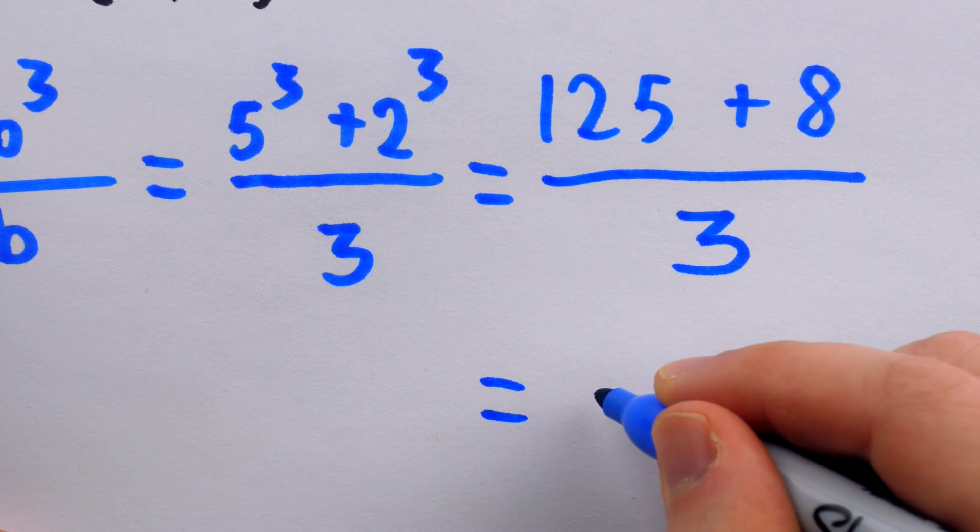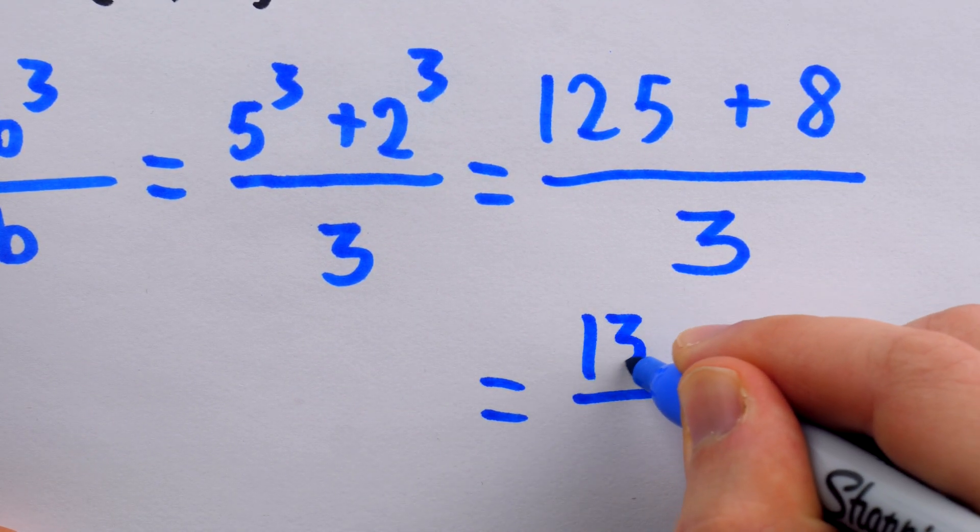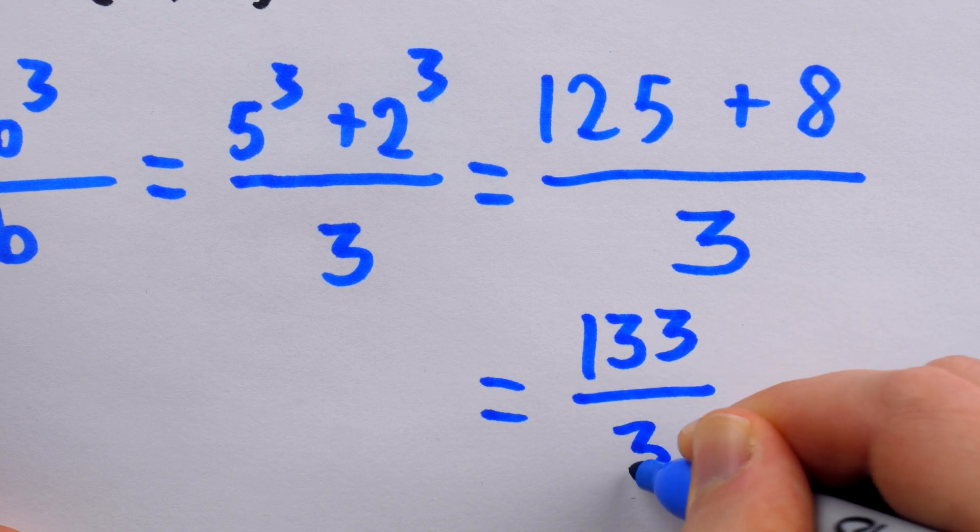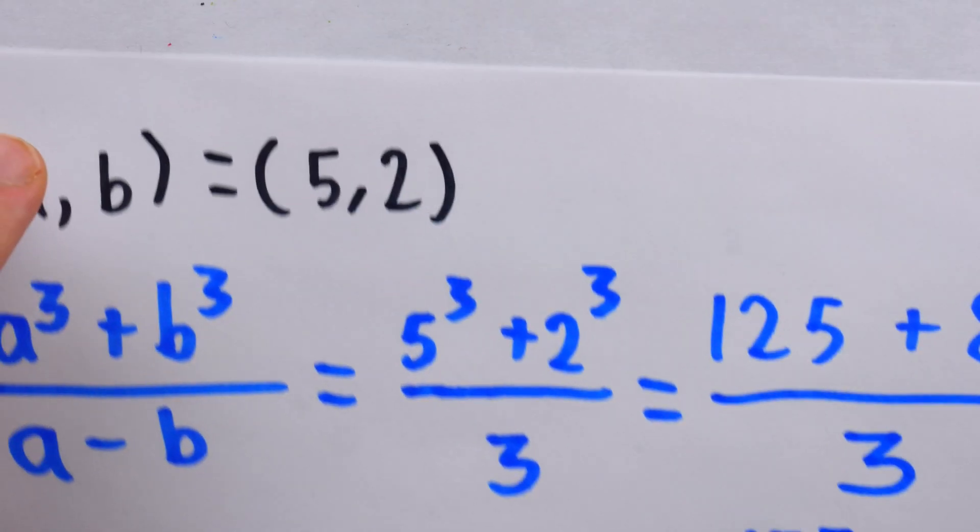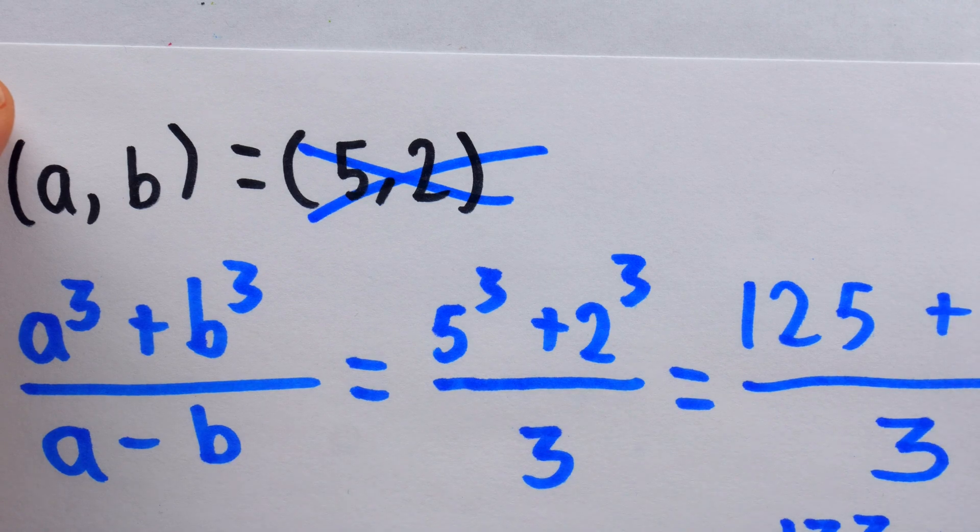This is 133 over three. That is definitely not a square. It's not even an integer. So this ordered pair does not work.